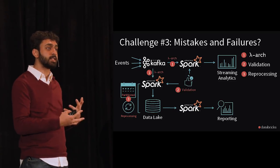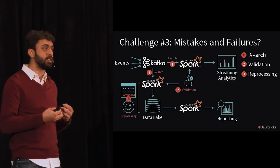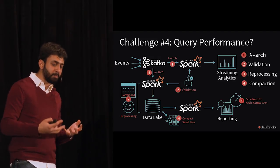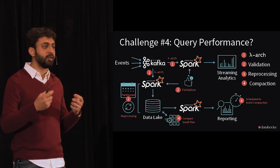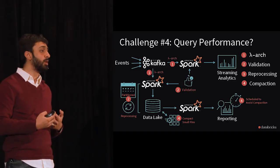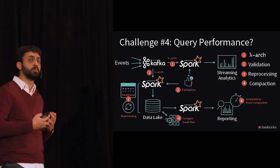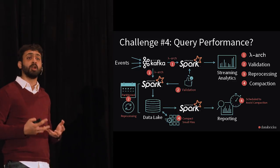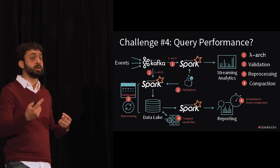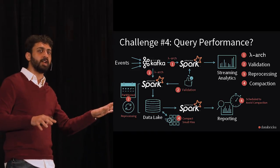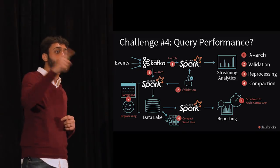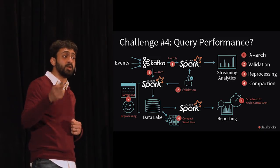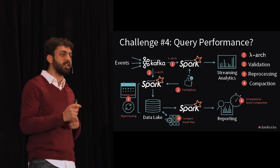We faced challenges around how to validate across two different pipelines and how to keep the data lake always correct as the golden source of truth. We also had query performance problems — dumping data every one minute from a streaming pipeline creates very tiny files, causing a huge blowup in query processing times due to excessive file listing. We needed to compact those small files, but compaction combined with reprocessing led to nasty file-not-found exceptions when the reporting job tried to read Parquet files that were being replaced.